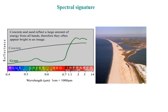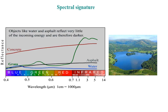Concrete and sand also have high reflectance in the visible spectrum and in the infrared, but their near-infrared reflectance is smaller than that of vegetation, though higher in a part called the shortwave infrared. Asphalt and water both have low reflectance in the visible and infrared spectrum. Water has a small peak in the blue part of the visible spectrum — that's why we sometimes see water bodies appearing blue.